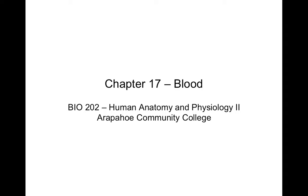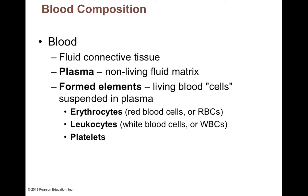We talked about blood a little bit going back to AMP1 because we said that blood was a connective tissue — in fact, it's a fluid connective tissue. The reason why blood is classified as a connective tissue is that it has the three elements all connective tissues have: cells, fibers, and ground substance.